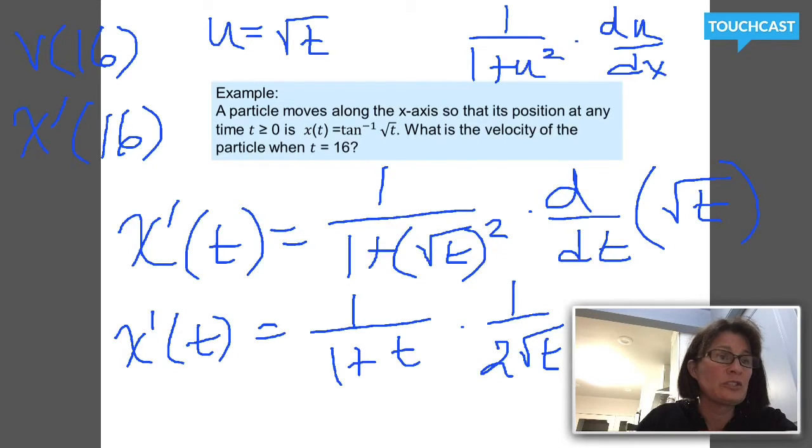Then the derivative of square root of t is 1 over 2 square root of t. That's just a simplified version of 1/2 t to the negative 1/2, which you could also write. This is my x'(t). That gets full credit. Don't tell the pre-calculus class. You have no obligation to rationalize denominators, to have no radicals in denominators. Your answer here is fine.